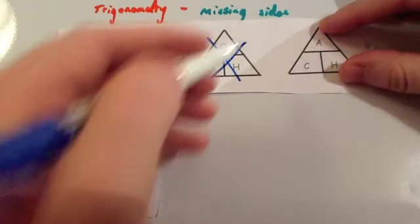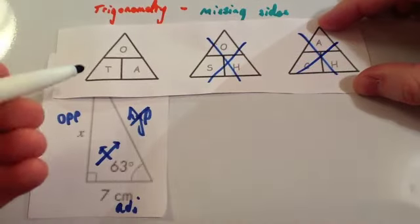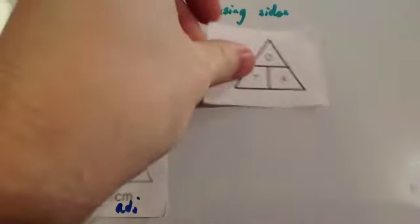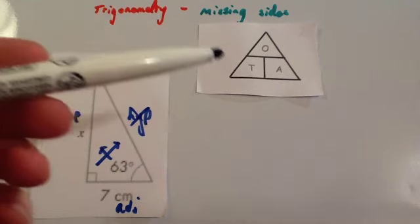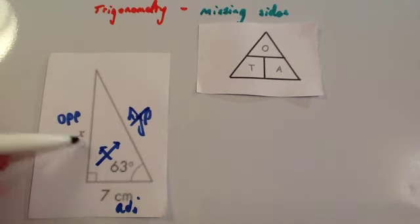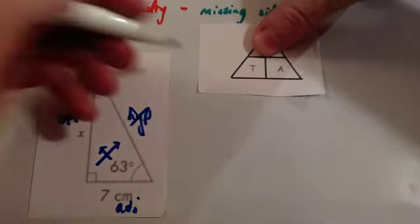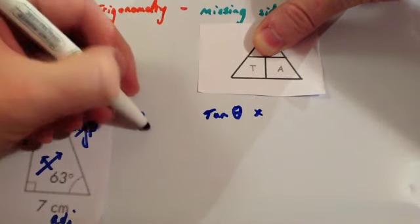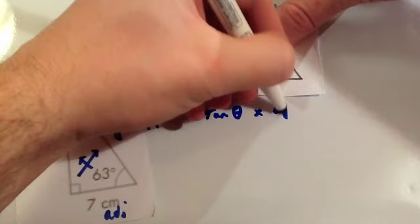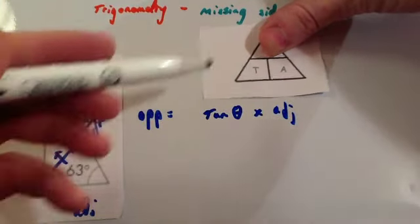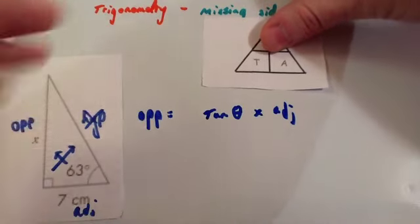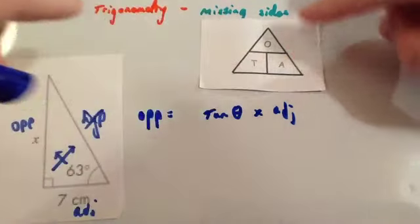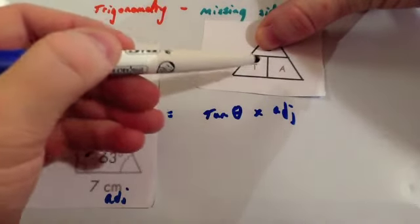We don't want to use the triangles with H in them. So we're going to use the 'two old angels' — the TOA triangle. Since we're looking for the opposite, we cover up the opposite, and we get: opposite equals tan(θ) times the adjacent. If you were looking for the adjacent, you would do opposite divided by tan. If you're looking for tan, you would do opposite divided by adjacent. But we're looking for the opposite, so we do tan(θ) times adjacent.